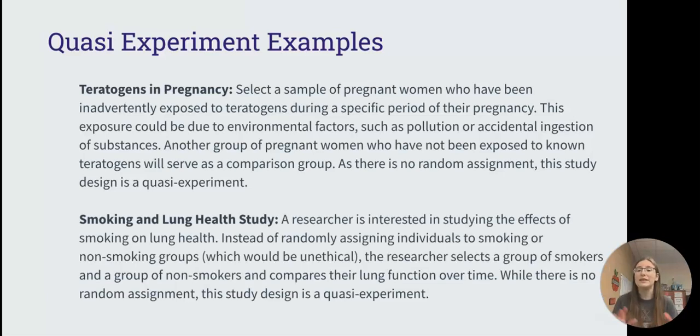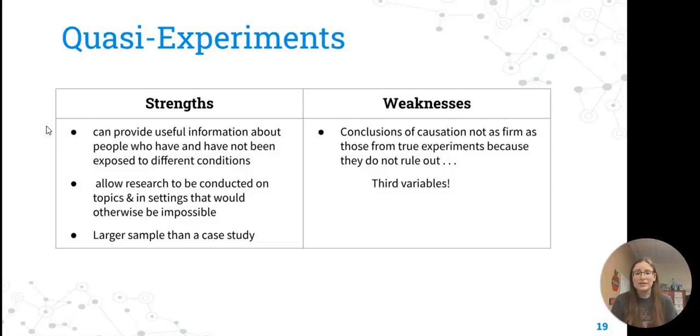Another great example would be something like smoking and lung health or smoking and cognitive ability. If we think there's a negative impact, it's not very ethical for us to do because we need to do no harm. Instead, we can find people who have already been smoking and then measure that against people who don't smoke. People have already chosen which group they're going to be in, so there may be other variables at play. It doesn't rule out third variables. But again, providing really useful information about things that we can't really study otherwise ethically, it allows us to have a larger sample than a case study.